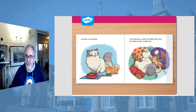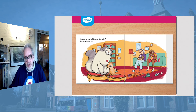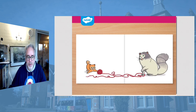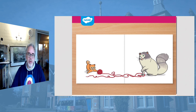They look very happy, don't they? Maybe having Muffin around wouldn't be so bad after all. You can see the little love heart there, and the little mouse toy has moved slightly as well. They all look very happy, and I bet the adults are very relieved too. So that is the end of our story. Don't forget, there will be some extra resources for you related to this story in the work folders.